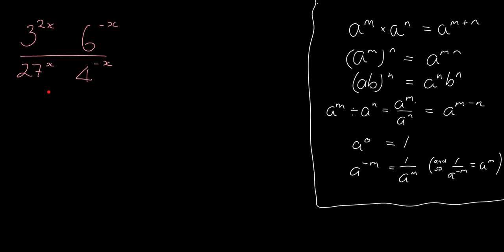So if we're faced with a question like this one where we've got a 3 and a 6 and a 27 and a 4, we actually can't progress here because we've got different bases. So we can't apply these rules of multiplying together or dividing.